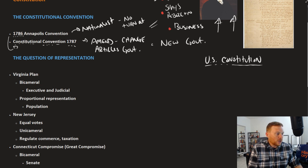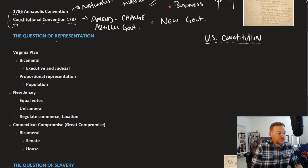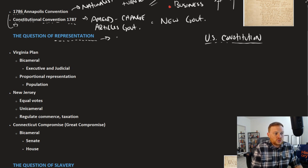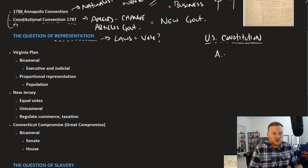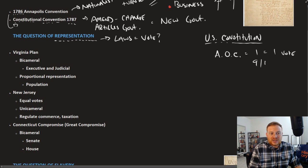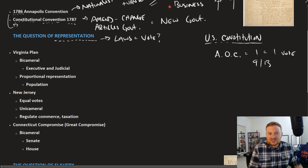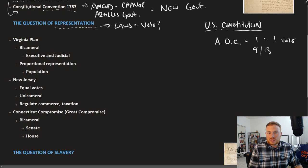One of the biggest questions was representation — how, in terms of laws, should the vote be had? Recall that under the Articles of Confederation, it was one state equals one vote. And in order for a law to be passed, you needed 9 out of 13. Well, that was not ideal for some states.